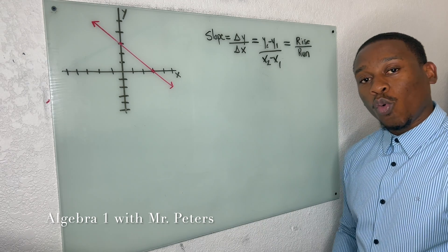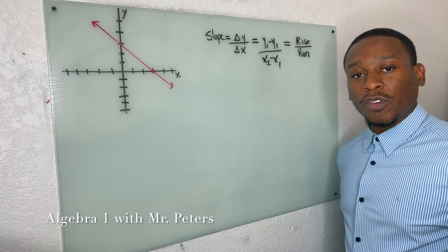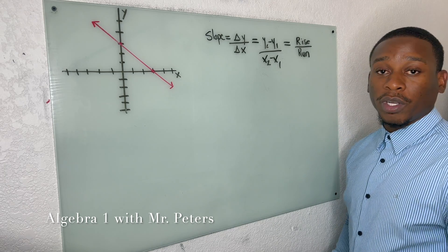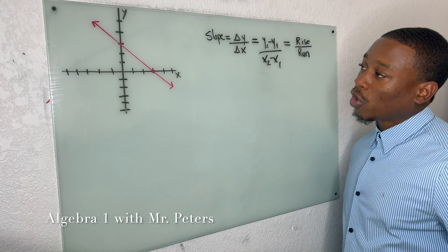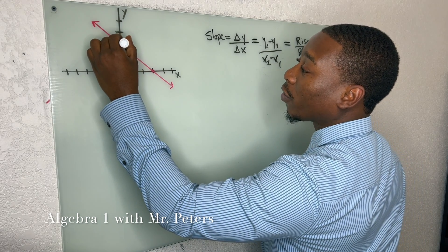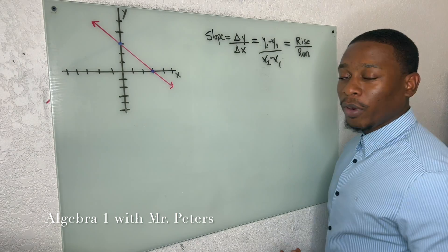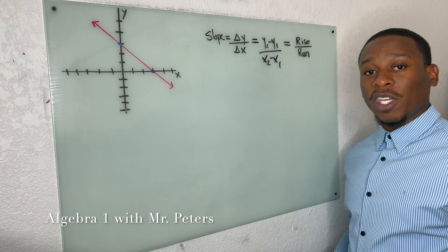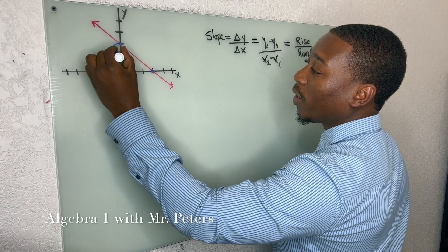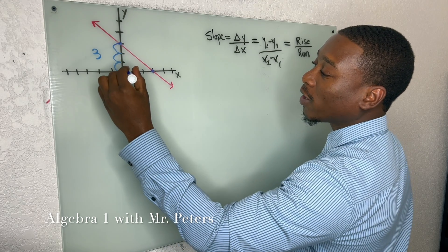There are two ways that we could identify slope. The first method, we're going to talk about rise over run. When I look at my first point and my second point, I'm going to see how many spaces I go down and over. So we go down one, two, three — that's our rise.